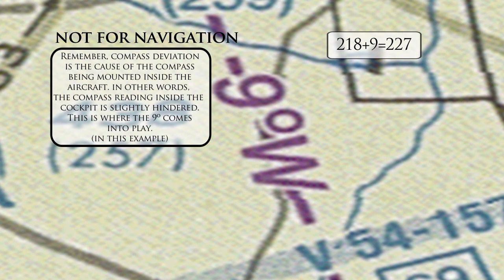Now all we have to do is calculate how the winds will affect our flight along the route, and we are left with our magnetic heading for the flight.